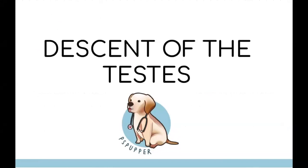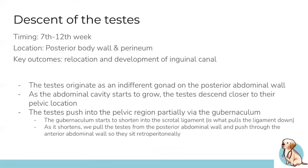This video is your first introduction to the reproductive system. There are going to be four videos dropped throughout the next two weeks. The first one is about the descent of the testes. The testes originate as an indifferent gonad on the posterior abdominal wall, and this basically happens in the seventh to twelfth week. Because they're in the abdominal wall, they have to get down to the scrotum, and this video is about how they get there and what changes around them as they descend.